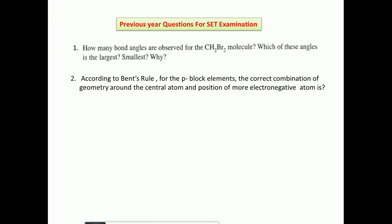For competitive exam questions from this topic: How many bond angles are observed for CH2Br2? It is a heteroleptic tetrahedral geometry with two different bond angles — Br–C–Br is greater than 109° and H–C–H is less than 109°. According to Bent's rule, the correct combination for p-block elements is: more electronegative atoms prefer axial position (less s-character) and less electronegative atoms prefer equatorial position (more s-character). Thank you for watching.